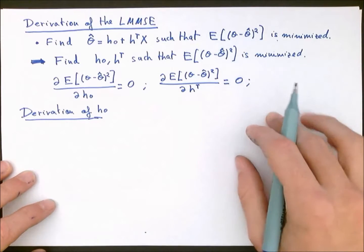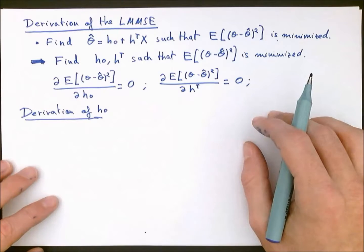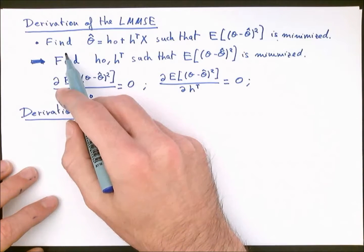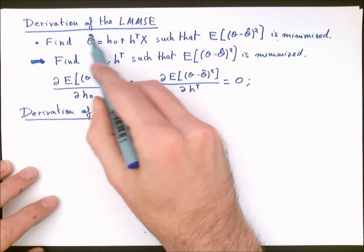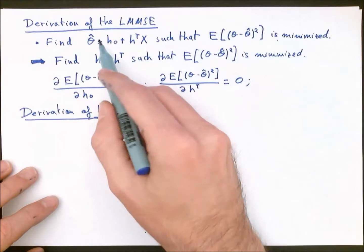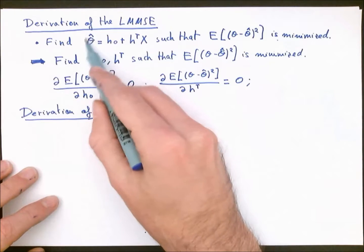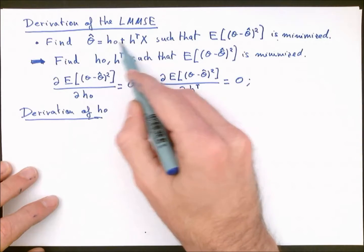In this video we show the derivation of the linear minimum mean squared error estimator. Similar to the derivation of the minimum mean squared error estimator, our objective is to find the estimator that minimizes the MSE. The difference is that now we constrain the estimator function to have an affine form.